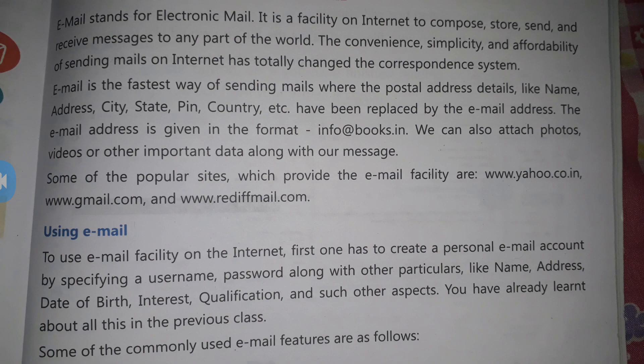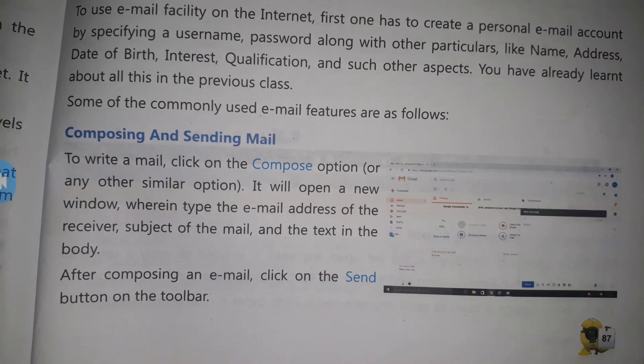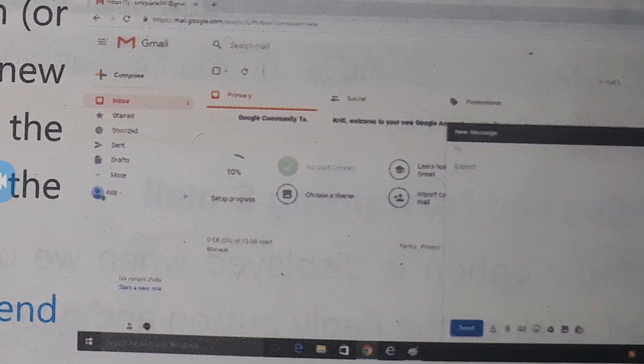To use the email facility on the internet, first you have to create a personal email ID and account with a specific username and password. To create an account, you provide a username, create a password, enter your date of birth, interests, hobbies, qualifications, name, and address. After that your email address is created. A Gmail window will open — you'll see a 'Compose' button on the side.